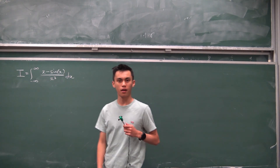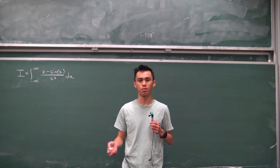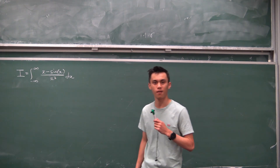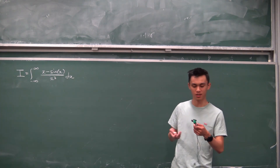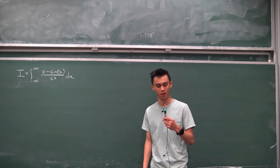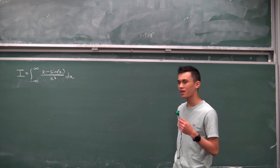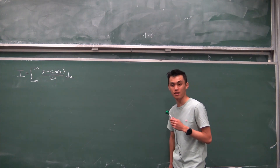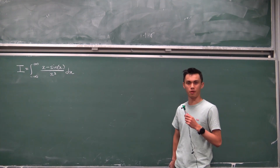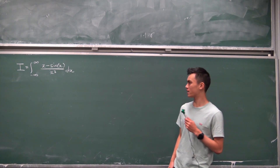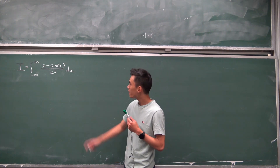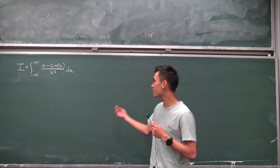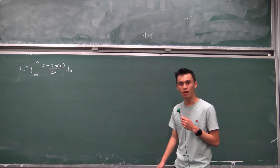Greetings everybody, and welcome back to another video. This morning I did something pretty silly — I left my lav mic at home, so I thought I had to ditch this recording session. But I realized I brought my earphones with me, so I just put my earphone microphone onto this whiteboard marker, hopefully that does fine. The aircon's going absolutely nuts in this room today, so hopefully there's not too much background noise. What exactly are we doing today? We're taking a look at this improper integral. I found this one on Stack Exchange, and it turns out a complex solution is pretty nice for it.